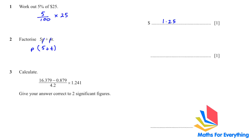The next question: calculate the given numbers and answer correctly to two significant figures. We get 4.57, but we round to two significant figures — count two numbers: one and two, then look at the number after, which is 7. Since 7 is five or more, we add one, so the answer is 4.6.